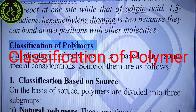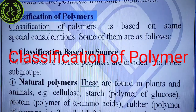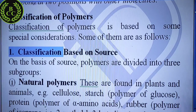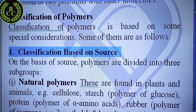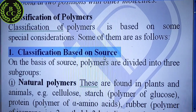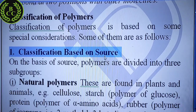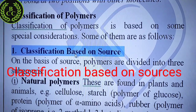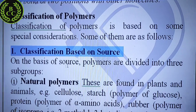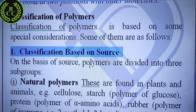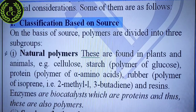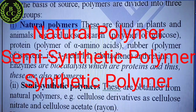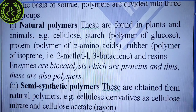Now we will study the classification of polymers. Classification of polymers is a board examination question. There are very different types, but the first classification is based on source — meaning where the polymer has been derived from. On this basis, there are 3 types: natural, semi-synthetic, and synthetic polymers.